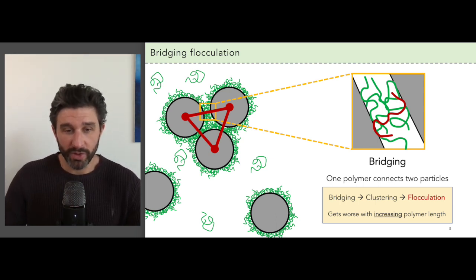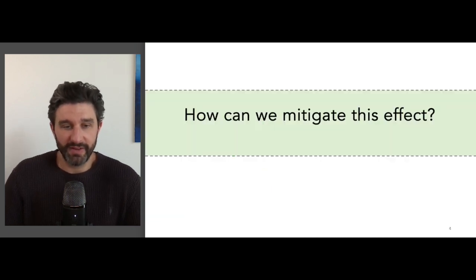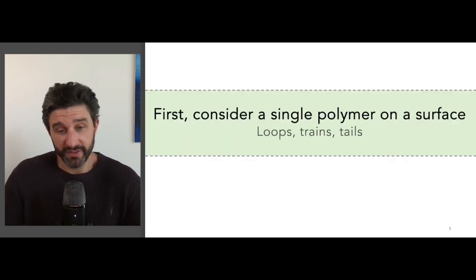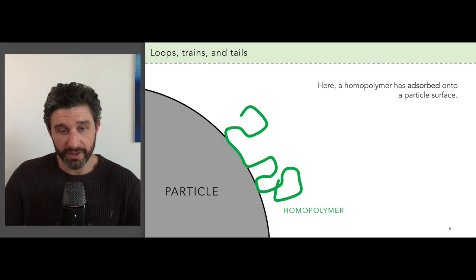This effect tends to get worse with increasing polymer length. So how can we mitigate this effect? First let's dig in a bit to understand how a single polymer behaves when it's absorbed to a particle surface. Here's a polymer that has diffused through the solvent and absorbed to a particle surface. There's actually a few important structures that the polymer can form in this state.